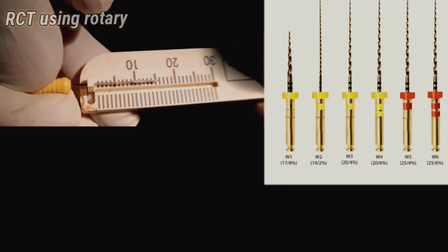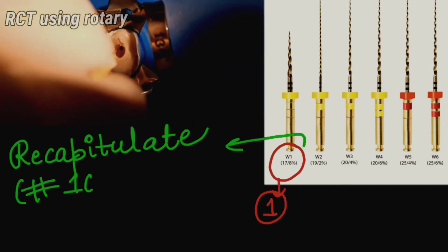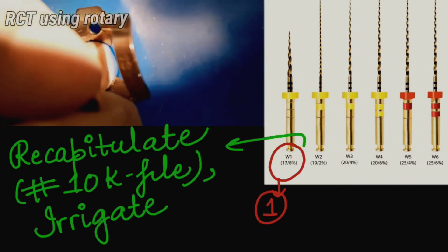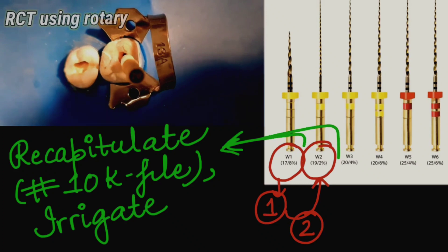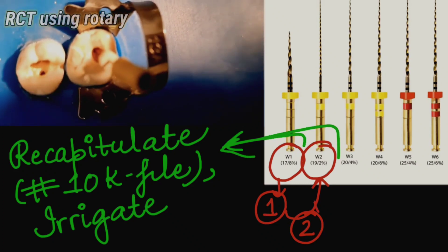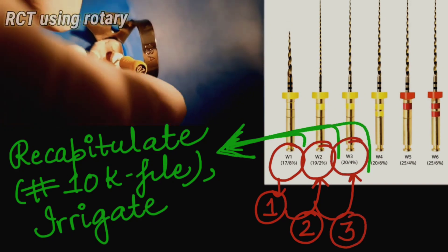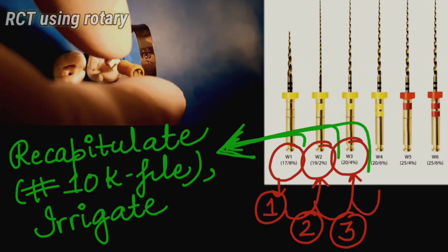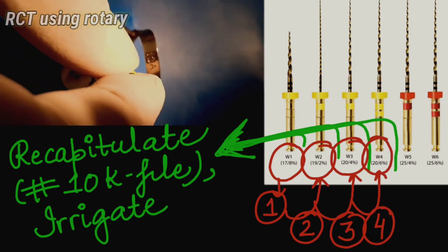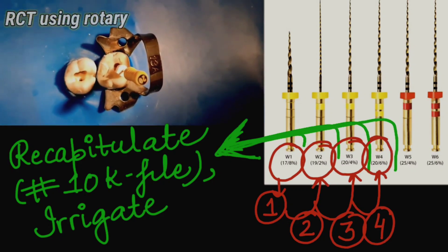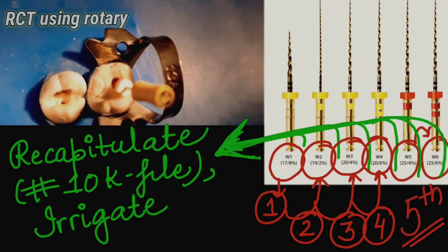This is the WalDent system. In this system, the first step is using the W1 file, then we recapitulate using a 10K file size, irrigate, and lubricate. The second step is using a W2 file, then recapitulate, irrigate, and lubricate. The third step is using a W3 file — irrigate, recapitulate, and lubricate. The fourth step is using a W4 file — irrigate, recapitulate using a 10 number file, and lubricate. The final step 5 is using W5 and W6 files for larger canals.